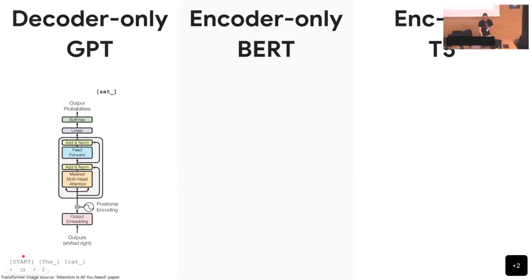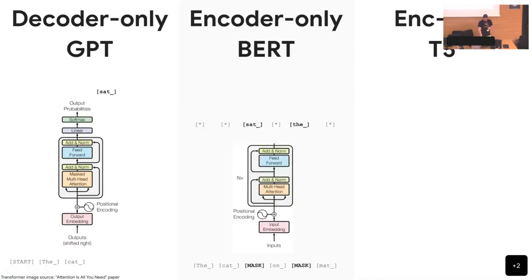How GPT works: we start with a start token and get the probability distribution over the first token in text, then sample from it. If we always take the most probable one in English, it's probably always 'the' — a bit boring. In reality when sampling text, we select less probable things or provide something it should start from. You could provide 'the cat' as if the model had generated it and ask for the probability of the next token. This is called prompting.